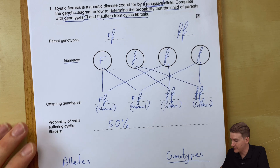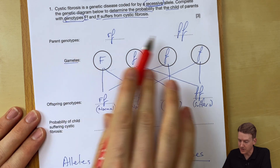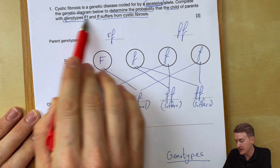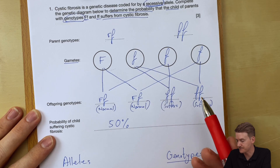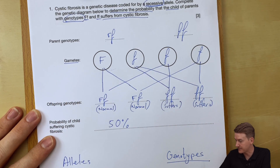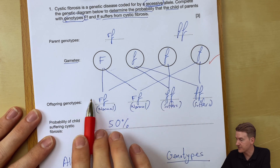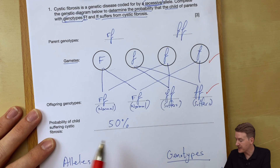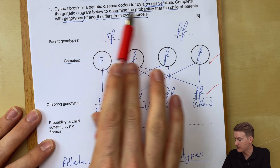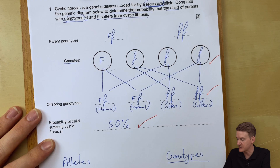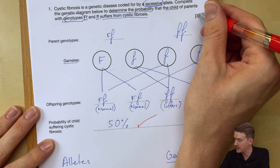Now let's quickly check how we might get marked for this. In some questions, you'll get marks for the parent genotypes — here they're already given in the question, so you won't get a tick for them. But right here, we've got all of the parents' gametes stated, so you'll get your mark there. We've got all of the possible offspring genotypes — there's a tick right there. And the final part of the question, we're looking for a probability, and we've determined that right there — it's 50%. There's another tick, and so there are three marks.